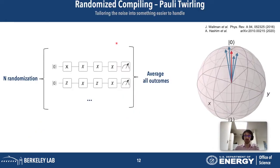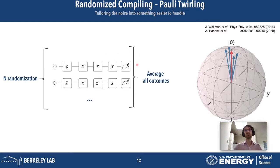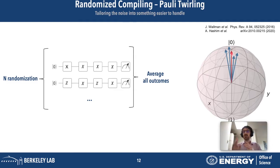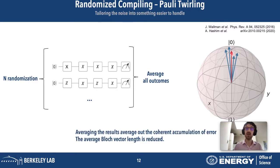One way to deal with this is called randomized compiling, or Pauli twirling. The idea is to use several circuits that all realize the same unitary — averaging all their outcomes. The blue results show individual noisy circuits doing the same unitary; when you average all of them, you get the red arrow, whose direction is much better than any individual blue one. You pay a price: the length of the Bloch vector is reduced. But randomized compiling averages out the coherent accumulation of errors. You can read the paper by Joel Wallman who proposed this method, and it generalizes to multi-qubit systems.